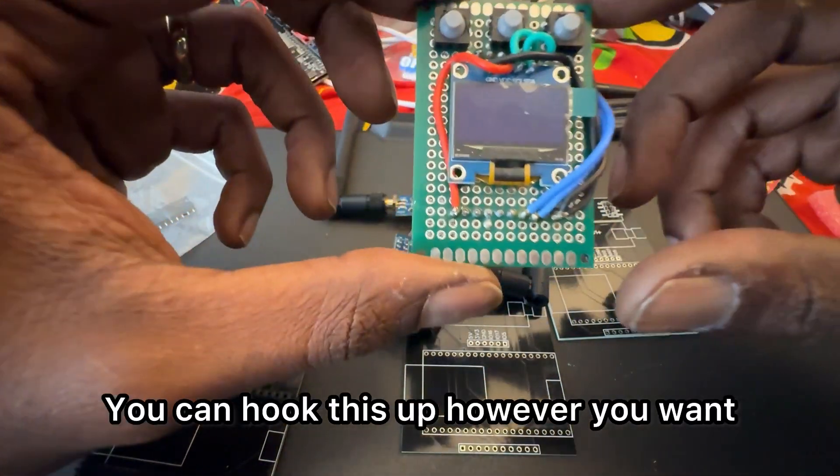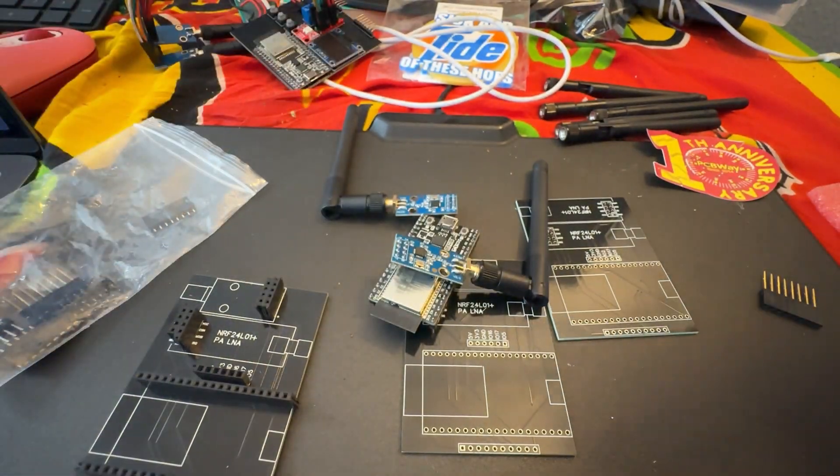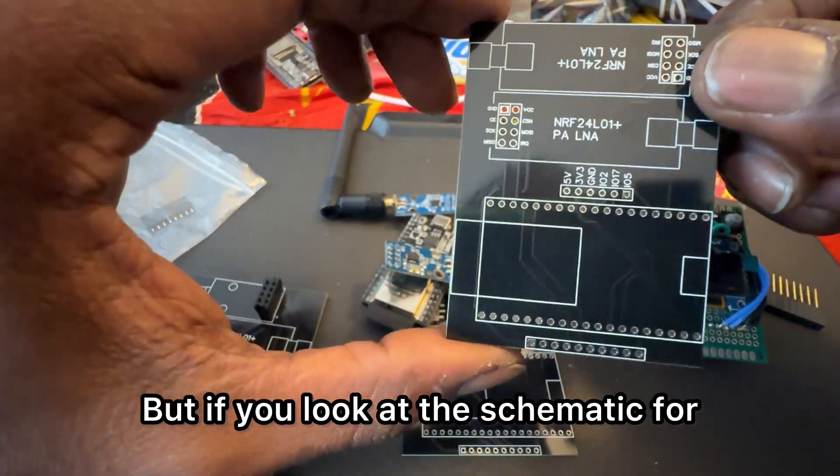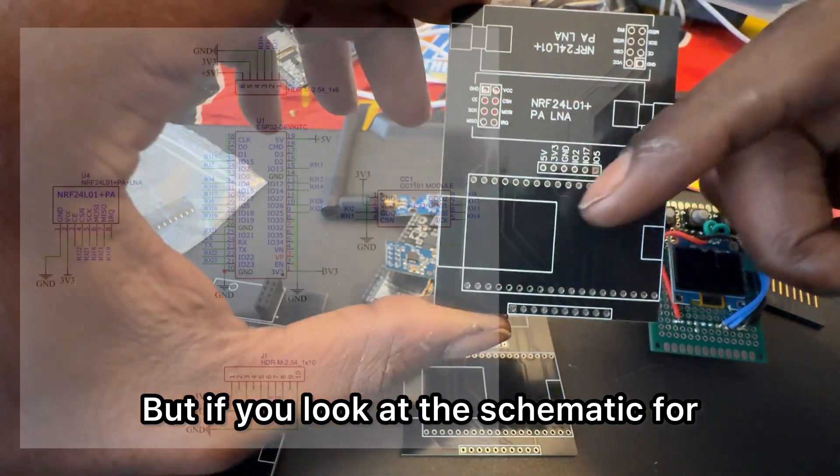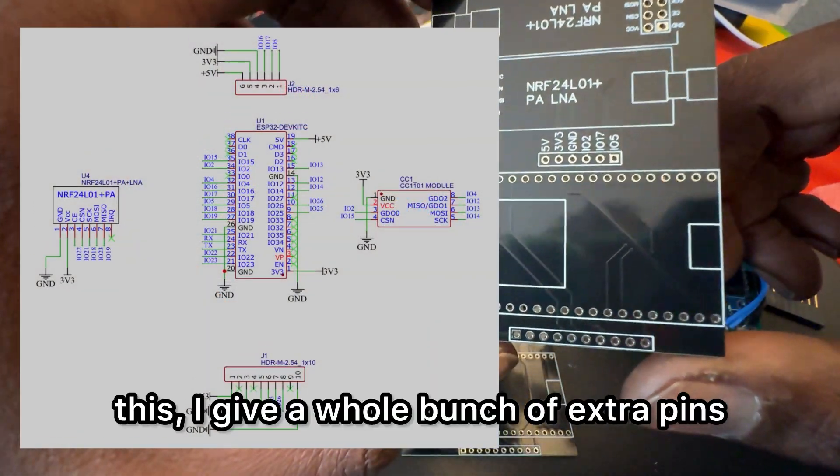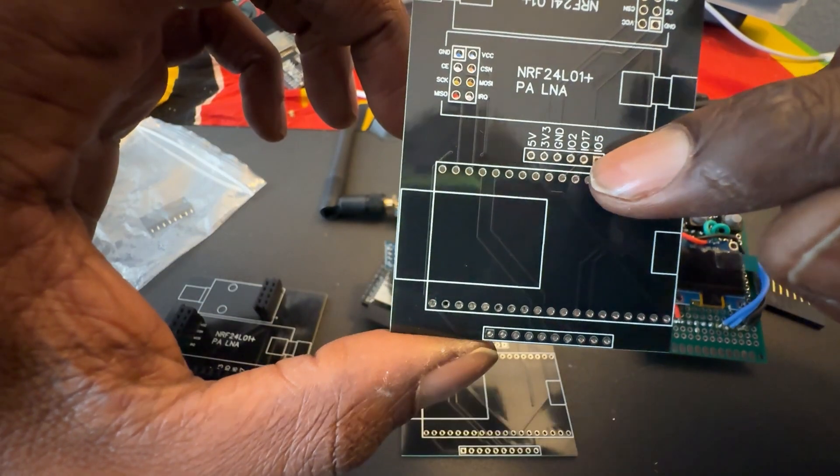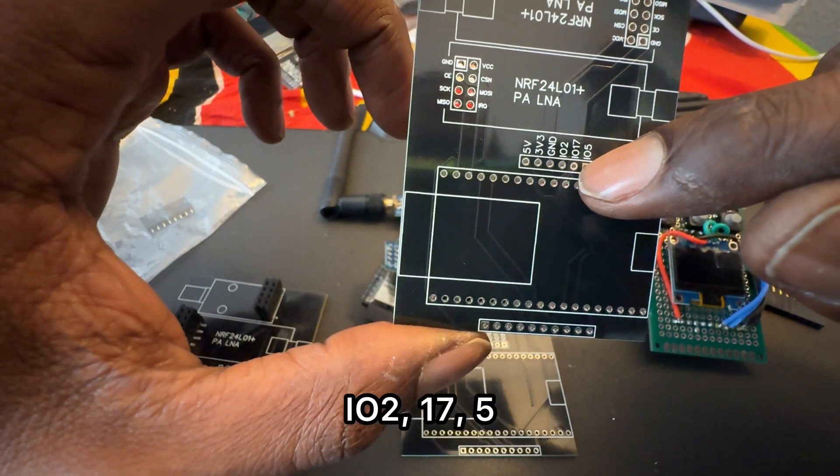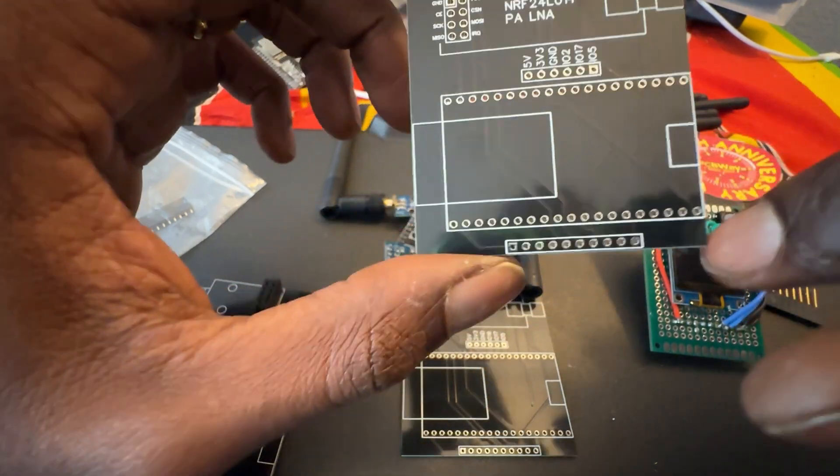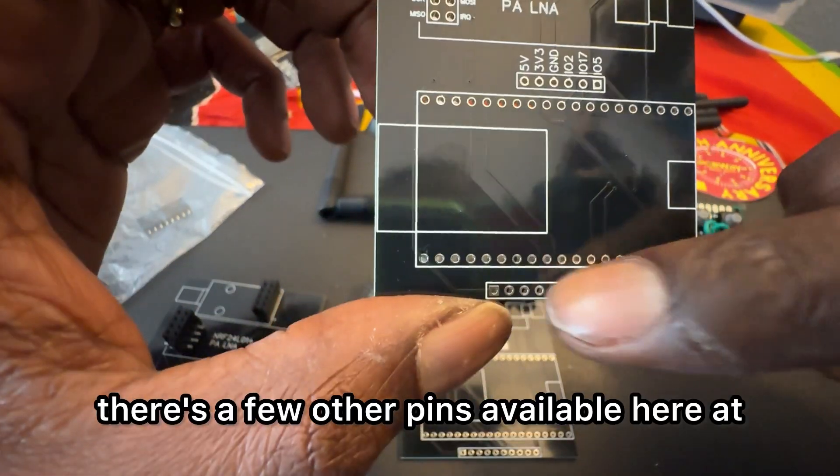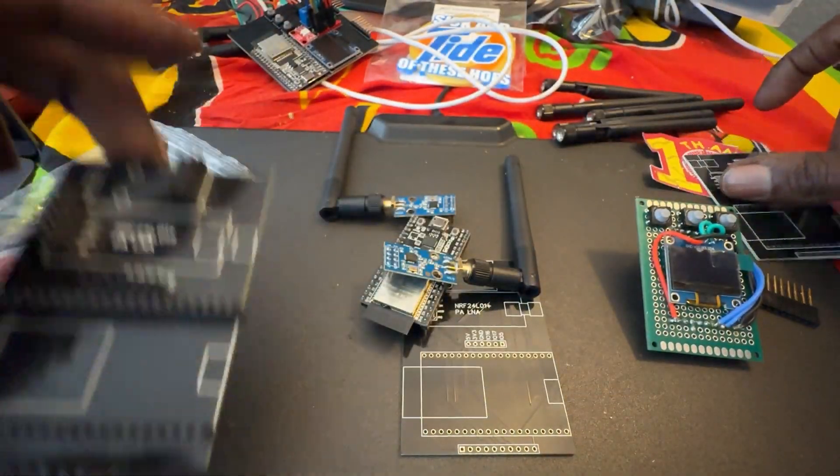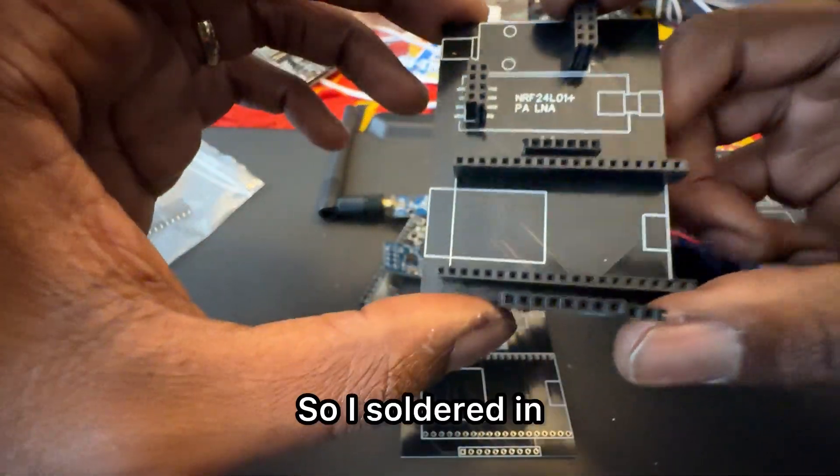You can hook this up however you want, but if you look at the schematic for this, I give a whole bunch of extra pins. So you have the 3 volt ground, IO2, 17, 5, and then there's a few other pins available here at the bottom as well.